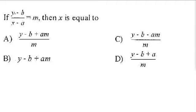All right, so in this problem they tell us that if y minus b over x minus a equals m, then x is equal to what? Well, essentially what they're telling us to do is to solve this question. So we have y minus b over x minus a, and we want to solve for x.